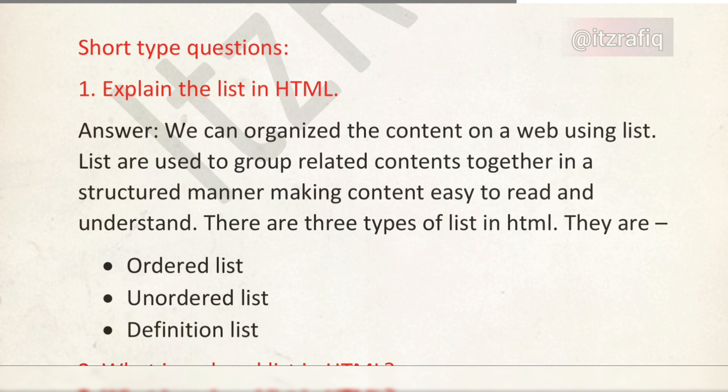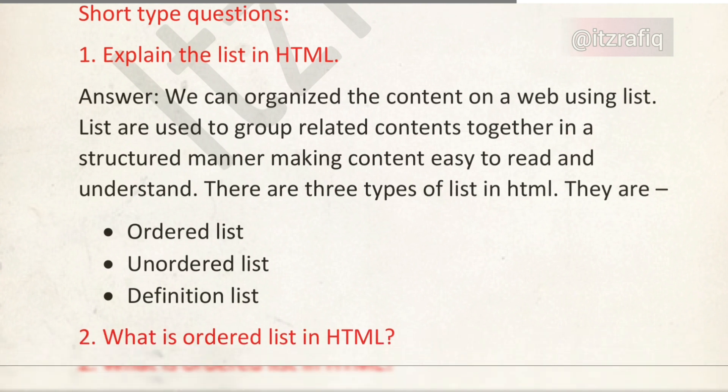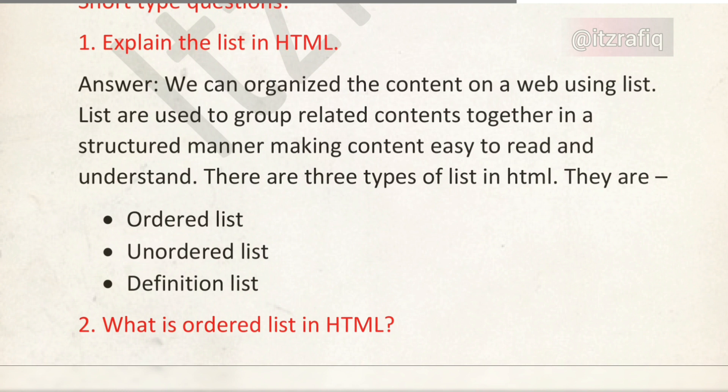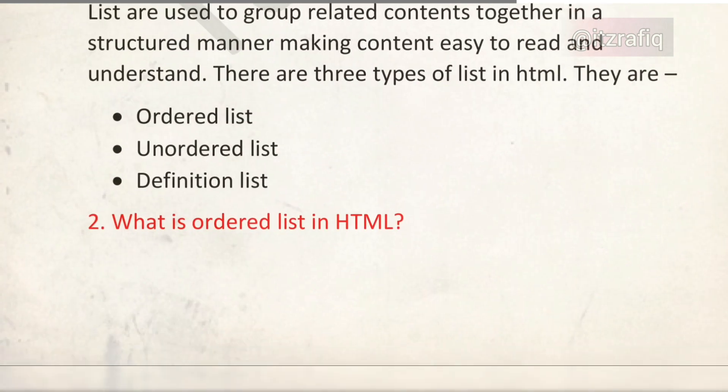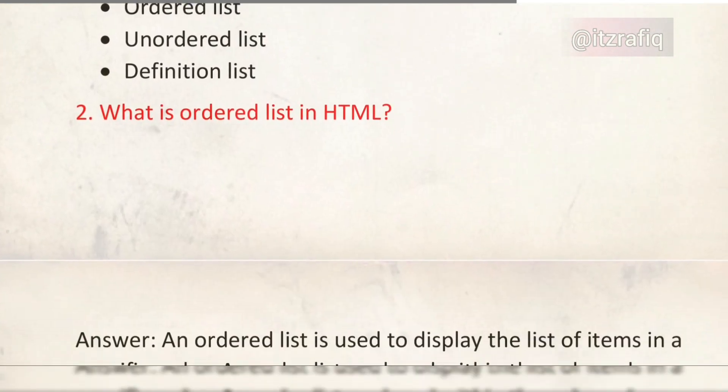First question: explain the list in HTML. We can organize the content on a web page using lists. Lists are used to group related content together in a structured manner, making content easy to read and understand. There are three types of lists in HTML: ordered list, unordered list, and definition list.